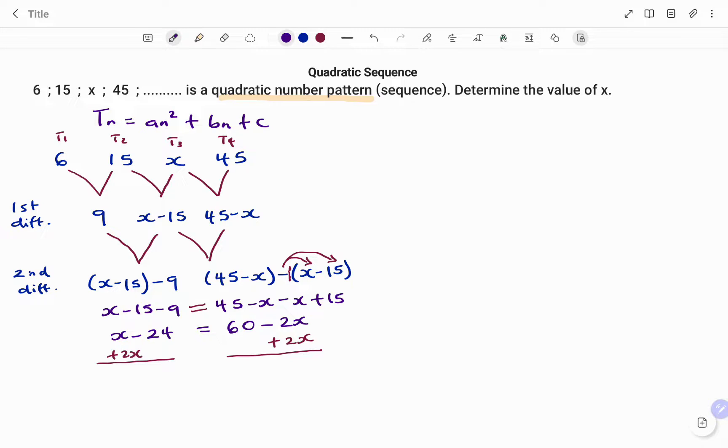So what I have is x plus 2x is 3x, I still have my minus 24 equals 60. 2x minus 2x, that's 0. Then I move my 24 by adding 24 to both sides.